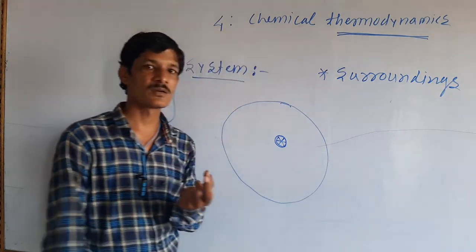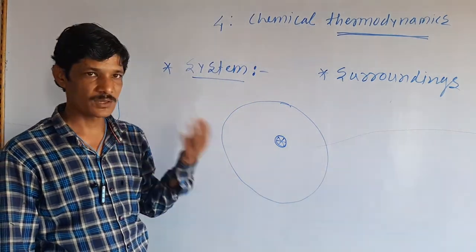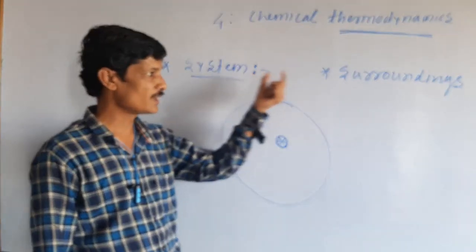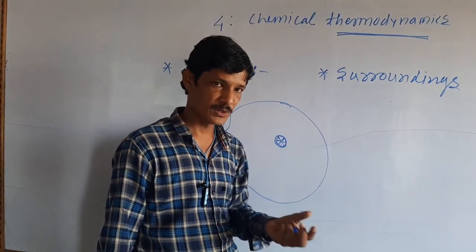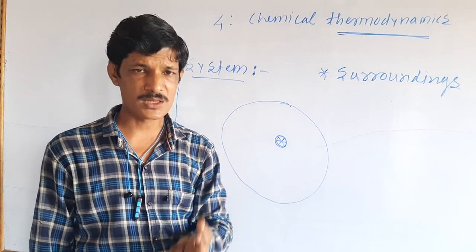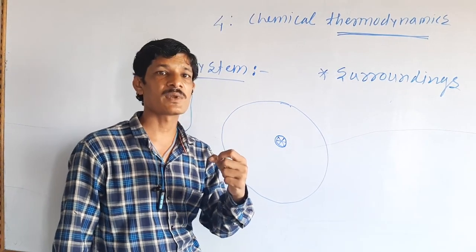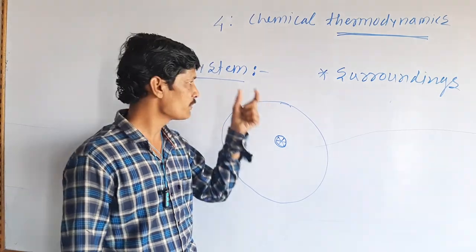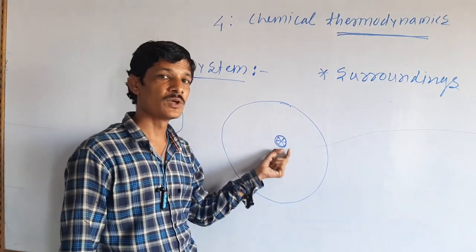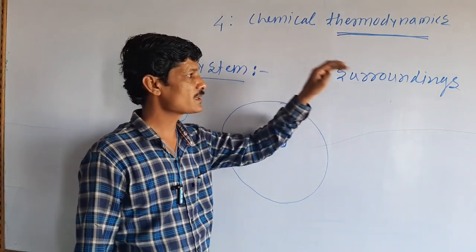These two basic concepts in thermodynamics are the system and the surroundings. The universe means that if we select an object to study the energy of, that object is the system. Everything else in the universe is the surroundings.